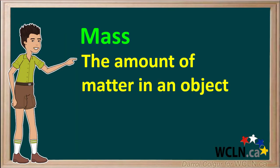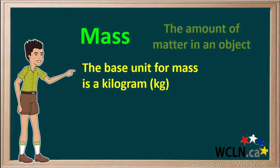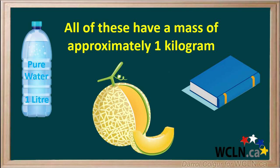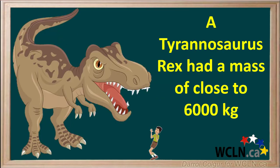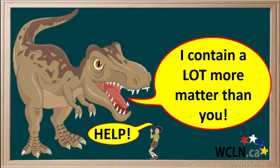Let's talk about mass. Mass is defined as the amount of matter in an object. The base unit for mass in the metric system is the kilogram, abbreviated as kg. A liter of pure water has a mass of 1 kg. A cantaloupe and a medium-sized textbook also have a mass of approximately 1 kg. The mass of an average teenage boy is about 55 kg. A Tyrannosaurus rex is thought to have had a mass of around 6,000 kg, so it contains much more matter than a teenage boy.